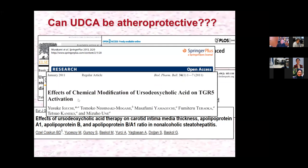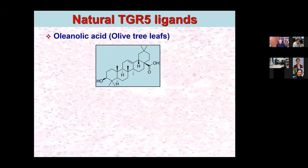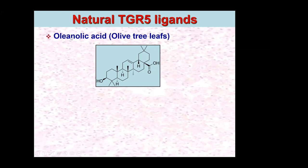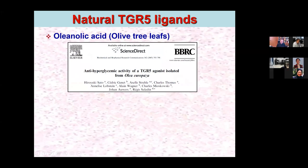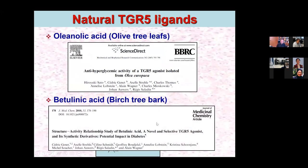There is interest in chemically modifying the ursodeoxycholic acid scaffold to activate TGR5, with multiple approaches to develop better drugs. Among natural ligands of bile acid receptors, one example is oleanolic acid from olive tree leaves, which has demonstrated anti-hyperglycemic activity. A second example is betulinic acid, isolated from birch tree bark, with data suggesting it might be used for treatment of diabetes.